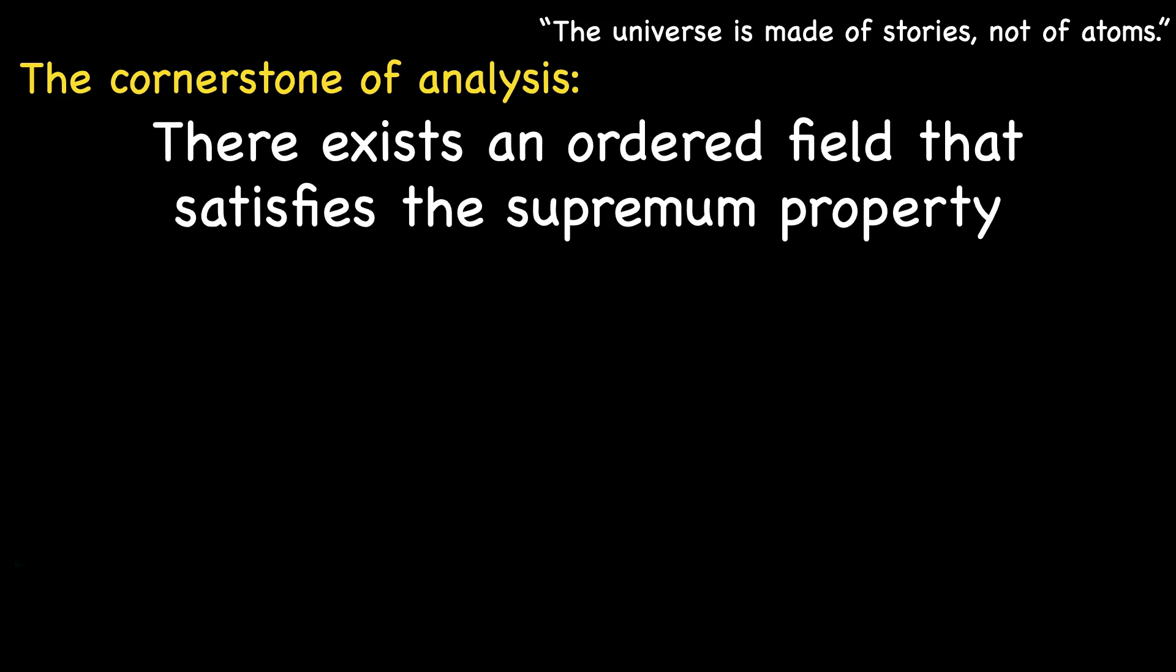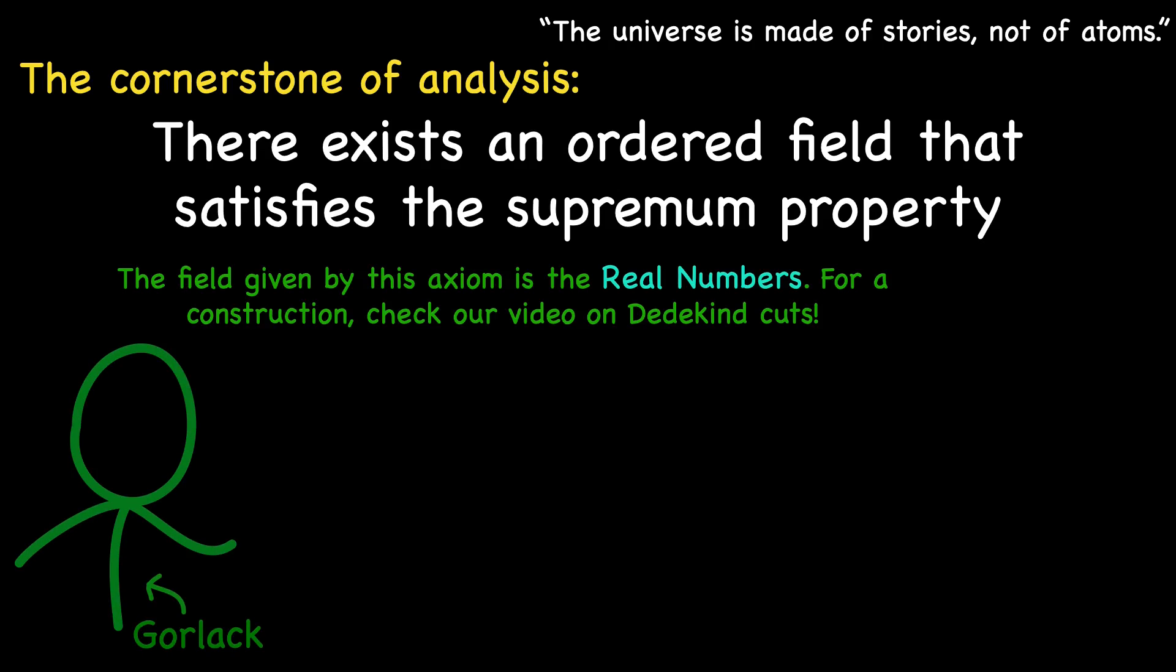However, our curiosity may drive us to prove this so-called axiom. In a separate video, we unravel the construction of the rational number field from the set of natural numbers with the successor. Similarly, if we can construct an ordered field with the supremum property from the rationals, we could reduce our axiom to the axioms of natural numbers with a successor.